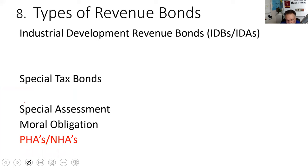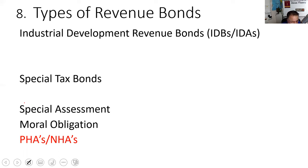Industrial development revenue bonds: Boeing announced it was moving headquarters and would go to Dallas, Denver, or Chicago — inviting competing offers. Chicago's industrial development agency asked Boeing what headquarters building they'd like. Boeing had an architect rendering ready. Chicago said: if you come to Chicago, we'll build that campus turnkey to your specifications. The interest and principal will be paid through the lease payments that Boeing makes. The first test question: corporate credit backs the bonds.